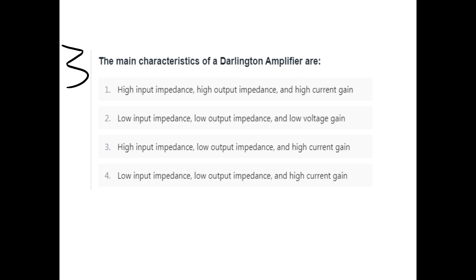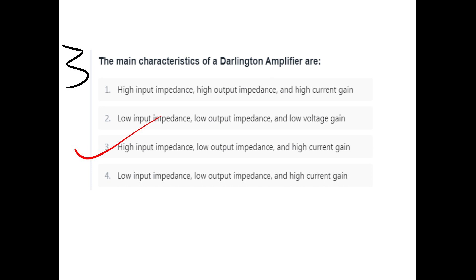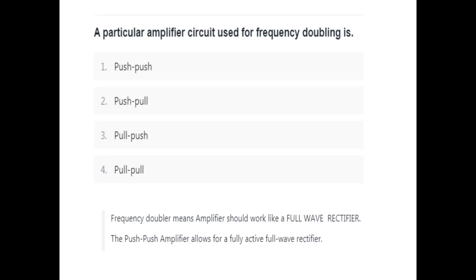The main characteristics of the Darlington amplifier: option C is high input impedance, low output impedance, and high current gain.